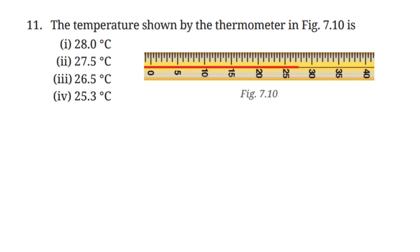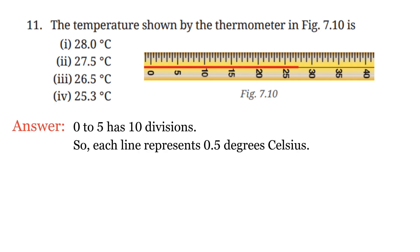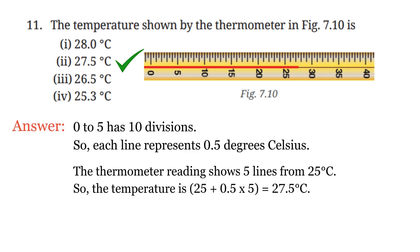Question 11: The temperature shown by the thermometer in figure 7.10 — options are 28°C, 27.5°C, 26.5°C, or 25.3°C. From 0 to 5 there are 10 divisions, so each line represents 0.5°C. The thermometer reading shows 5 lines from 25°C, so the temperature is 27.5°C.